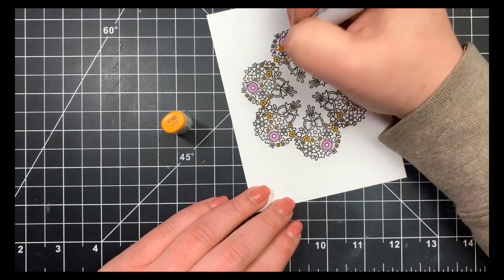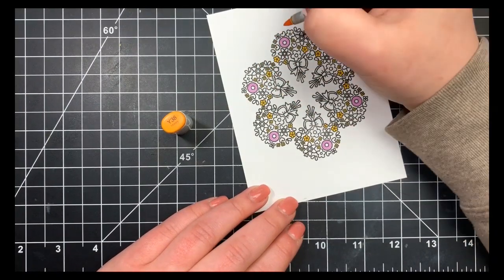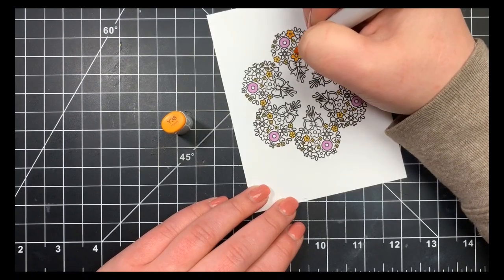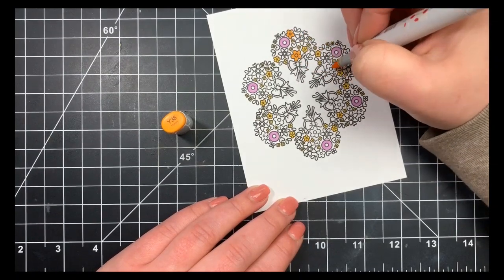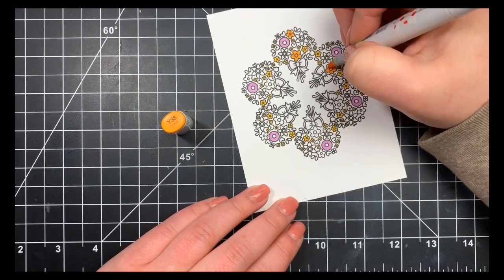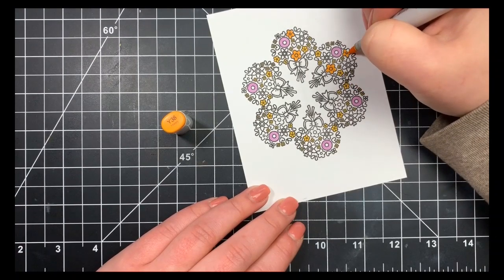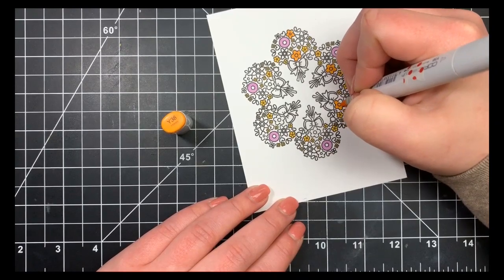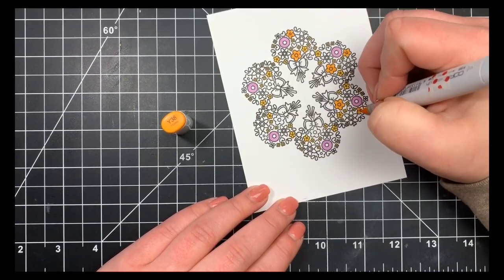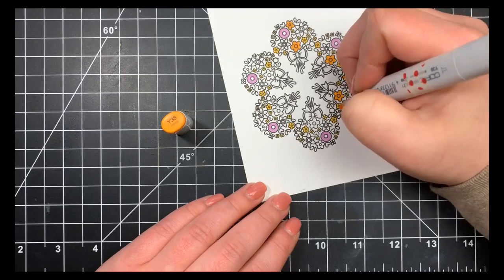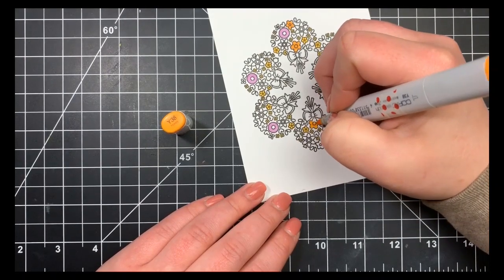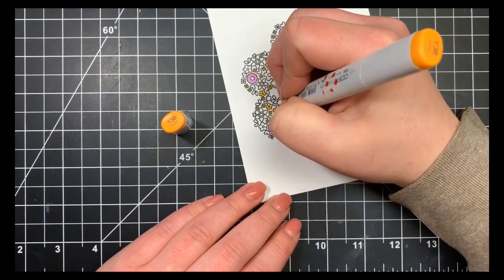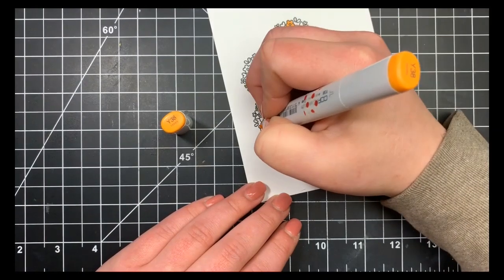I definitely went over the lines and had a little bit of bleeding for those little tiny ones. You just want to touch the tip of the marker to the paper. The alcohol ink will spread a little bit. It's probably not noticeable on a larger image, but for a teeny tiny one, let the alcohol ink spread.